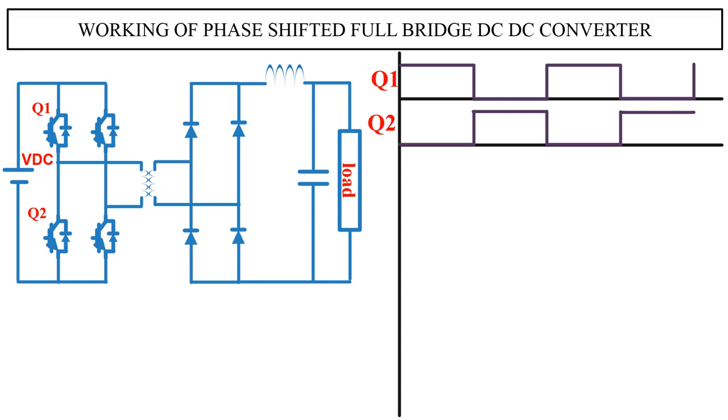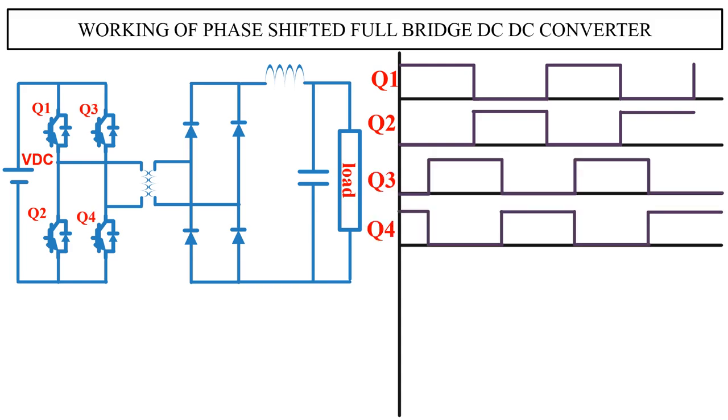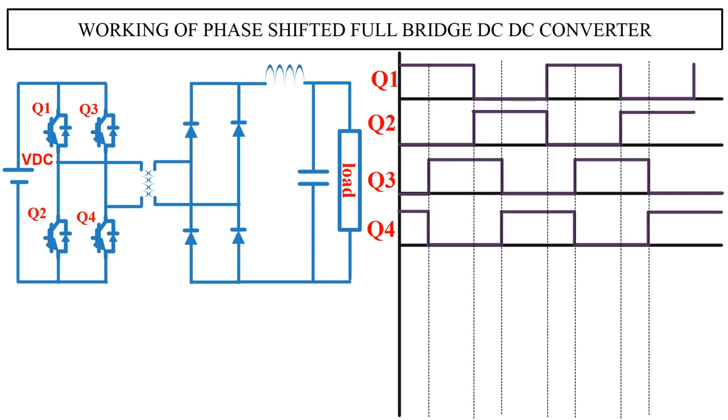Now for switch Q3, we use the same PWM that is used for switch Q1, but with some phase shift. So this is the PWM for switch Q3. Now inverting this signal will give the PWM for switch Q4.